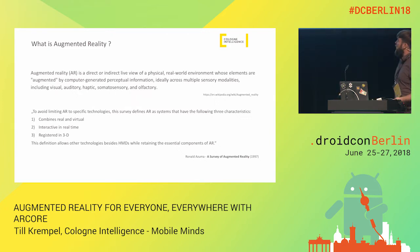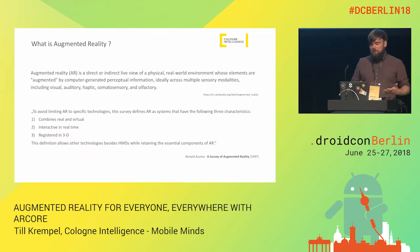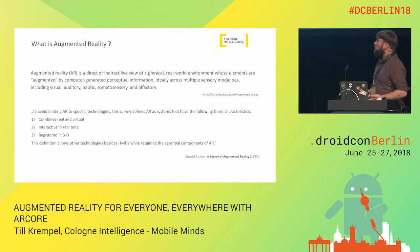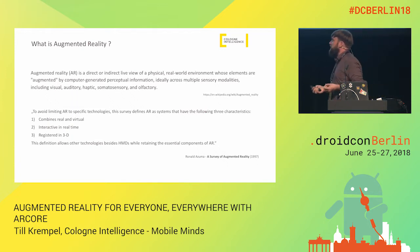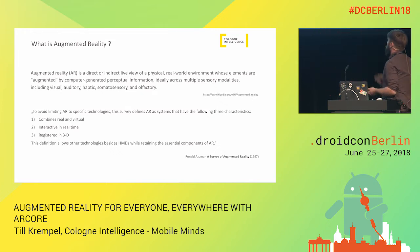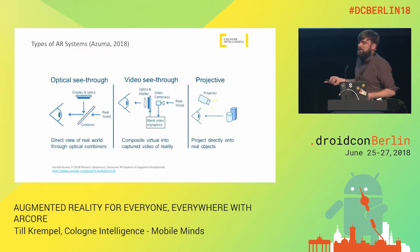This is the one slide that has the most characters in the whole talk. We need a common understanding of what augmented reality is. The key points from these definitions are that it's real-time, it combines many different senses — vision, sound, maybe haptics — and it's interactive. Even though a football game effect is kind of AR, it's not real-time and not interactive — that's the difference. And it's registered in 3D. One definition is from Wikipedia, and one is from Ronald Azuma, who did an excellent survey of augmented reality in 1997.